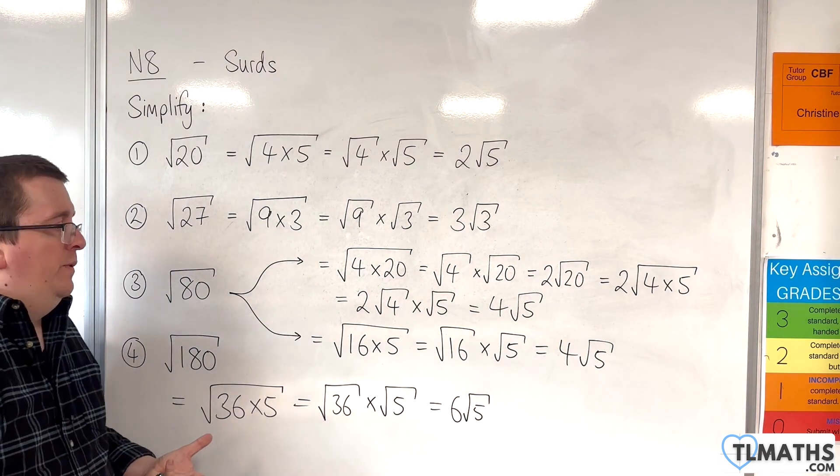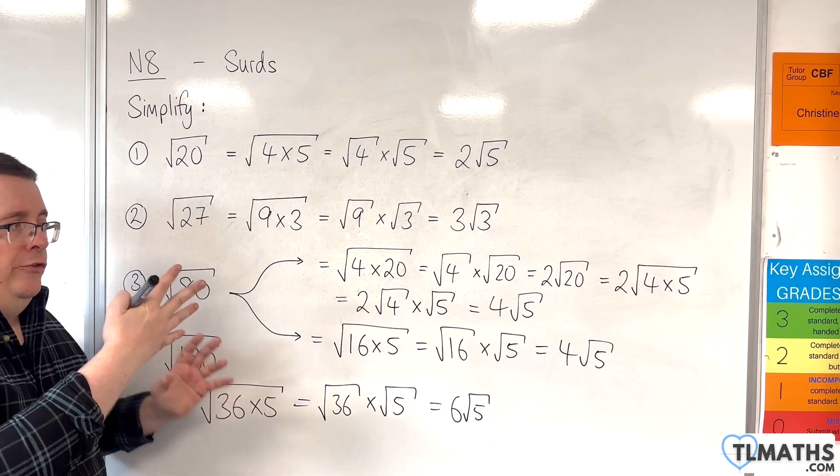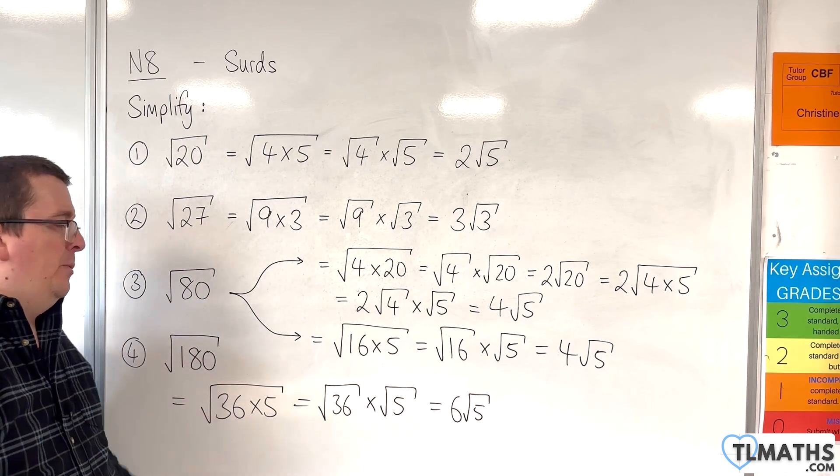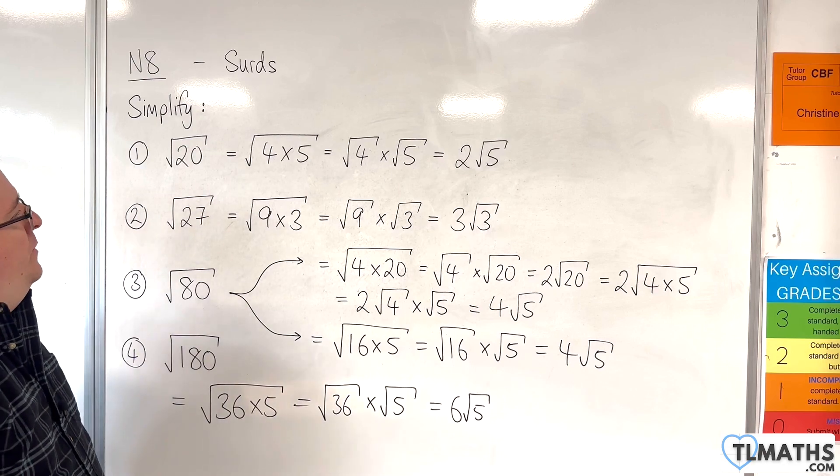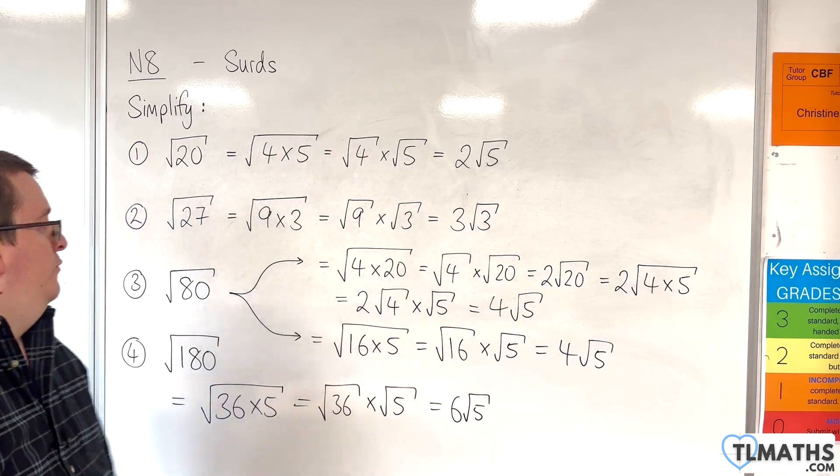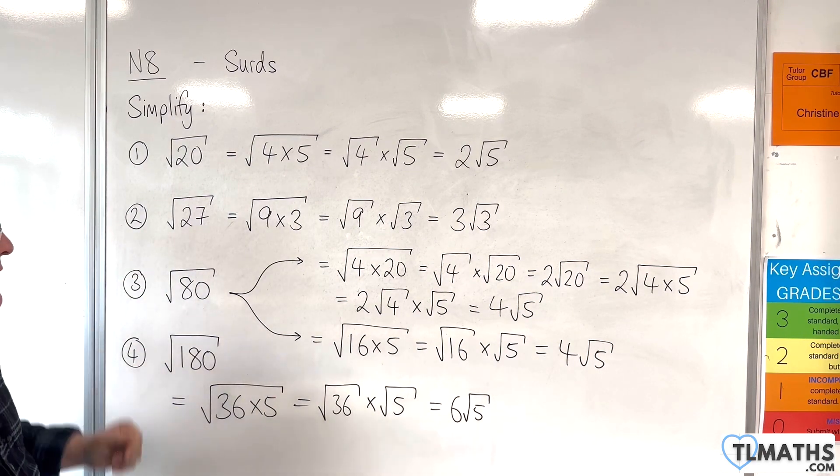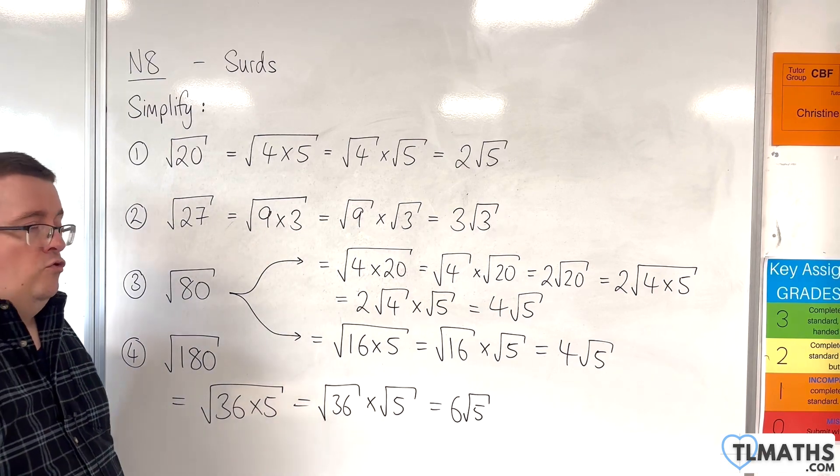So the working that you do with these questions isn't always going to be the same. It really depends on which square number you spot goes into the number under the square root first. Some of them you don't really have any choice. There's only one way that you can go through the process. But others, like the square root of 80, there are a couple of routes through that you could try.